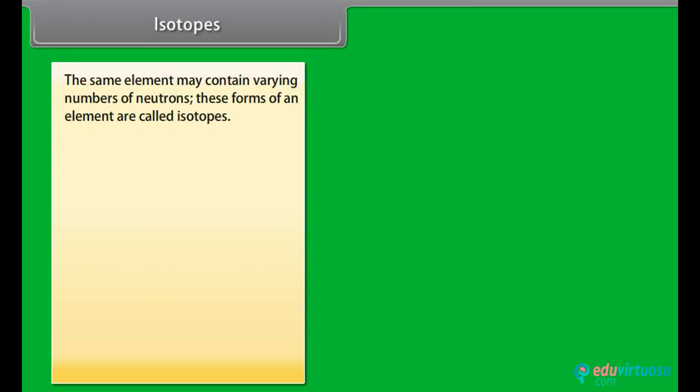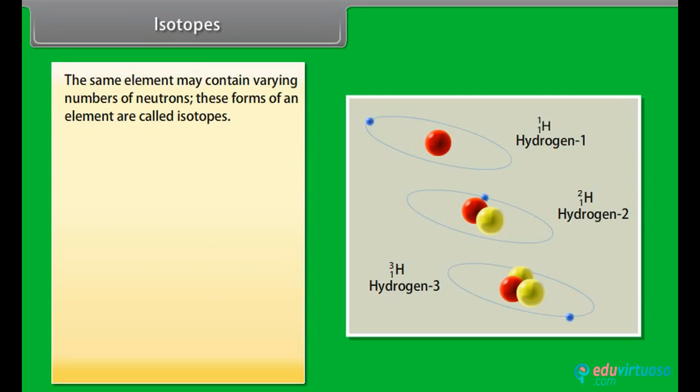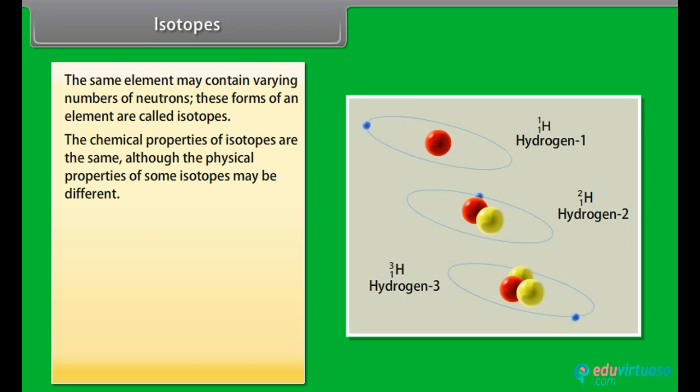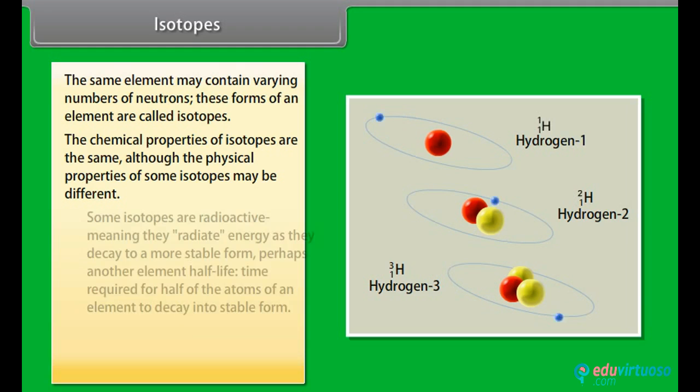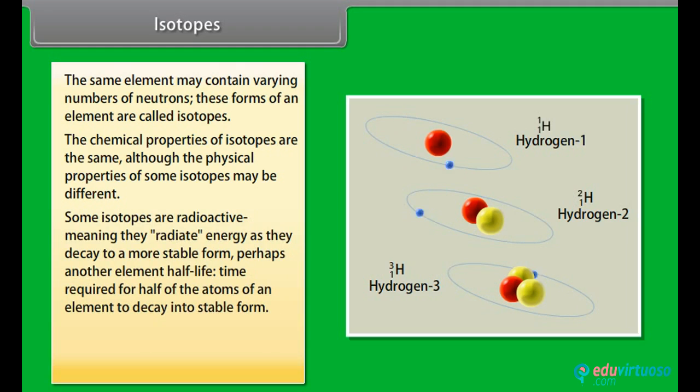Isotopes. The same element may contain varying numbers of neutrons. These forms of an element are called isotopes. The chemical properties of isotopes are the same, although the physical properties of some isotopes may be different. Some isotopes are radioactive, meaning they radiate energy as they decay to a more stable form. Perhaps another element, half-life. Time required for half of the atoms of an element to decay into stable form. Another example is hydrogen with atomic number of 1 can have 1, 2 or 3 neutrons.